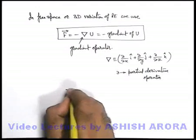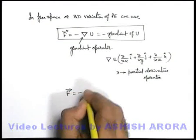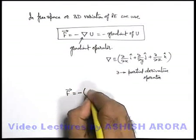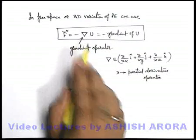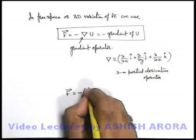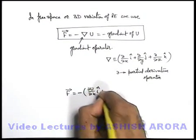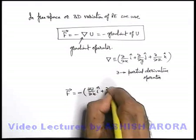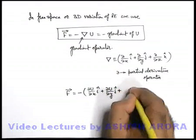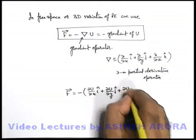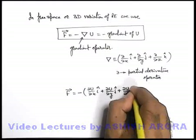Applying this operator, the force vector in a 3D variation can be written as negative of: del U over del x times i-cap, plus del U over del y times j-cap, plus del U over del z times k-cap.